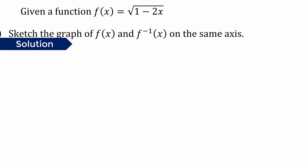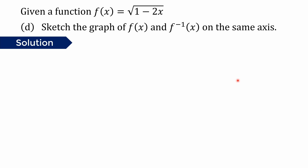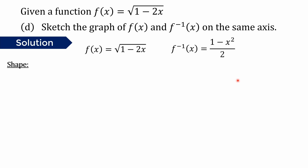The last question is to sketch the graph of f(x) and f-inverse on the same diagram. We have f(x) equals square root of 1 minus 2x and the inverse, which is 1 minus x squared over 2. We can choose to sketch f(x) first. We determine the shape of the graph from the signs of x and y.